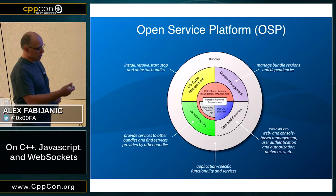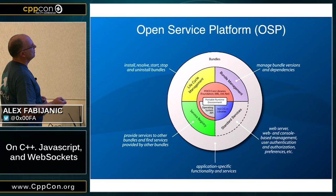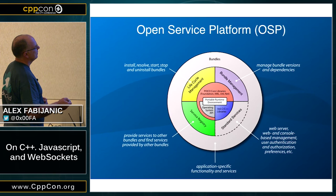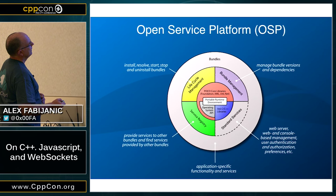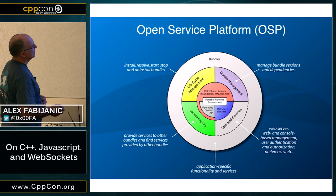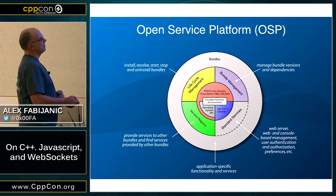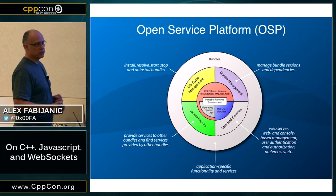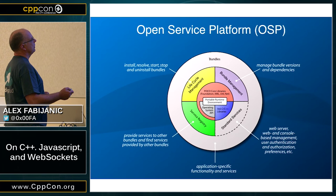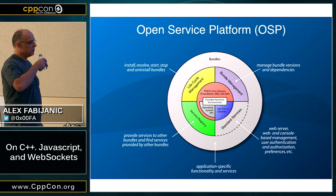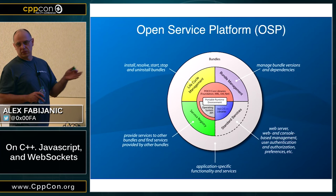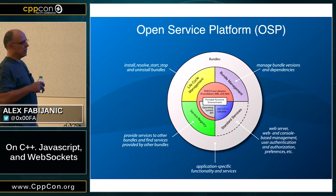This is what OSP looks like. At the heart is your platform, operating system, standard libraries, and POCO. Then there's the OSP system part with a service registry, lifecycle management where you can install, resolve, start, stop, and uninstall bundles, plus bundle management for versions. There are standard services such as web server and console-based management. Some of these are still commercial, but most of it is open source. Your applications come as bundles that are loaded and utilize this system to provide services. It's very easy to make your own service bundle — just register with the registry and other bundles can access it.